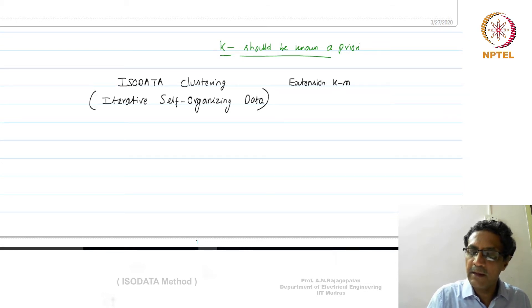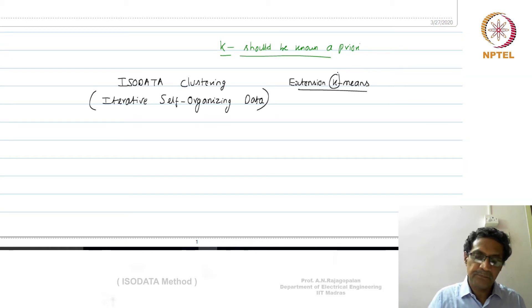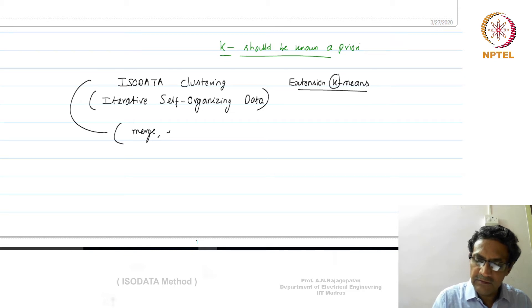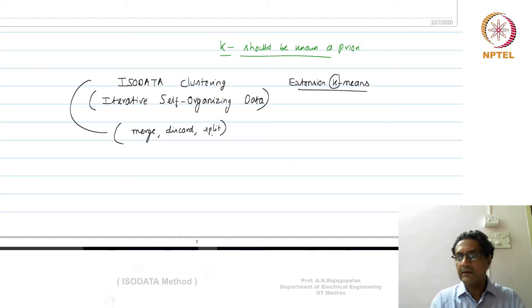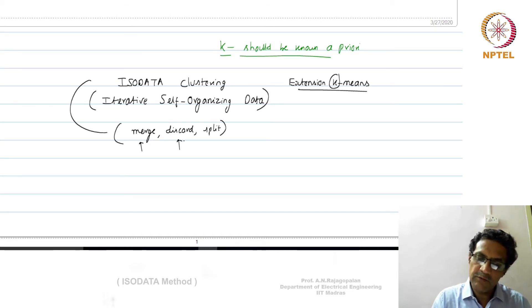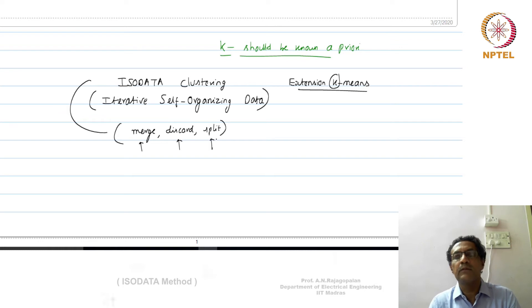ISODATA utilizes K-means along the way but has additional flexibility in that K is allowed to change as iterations go on. It hinges on three main operations: merge — allowing two clusters to merge if their means are too close; discard — dropping a cluster if it has too few samples; and split — splitting a cluster if the variance within it is way too high.